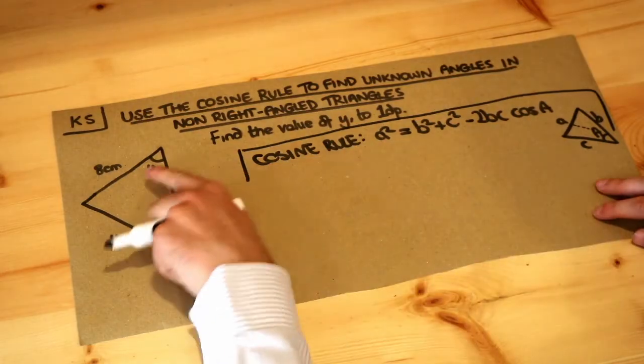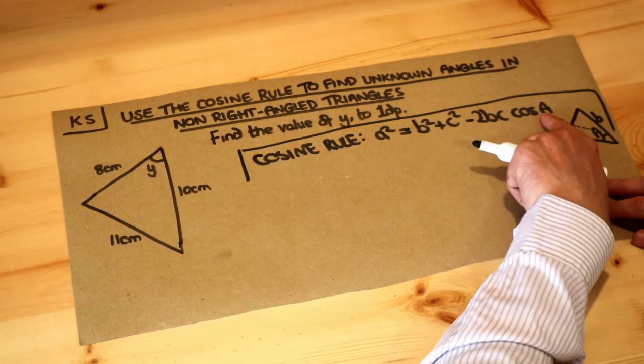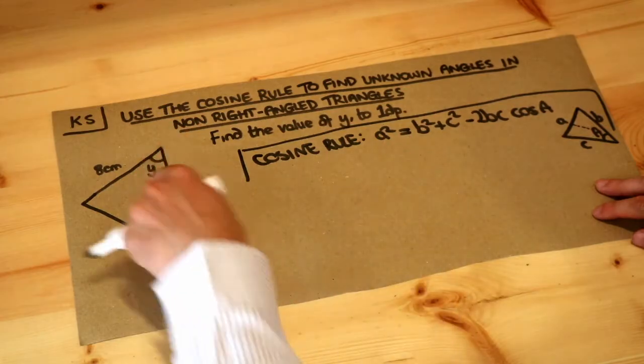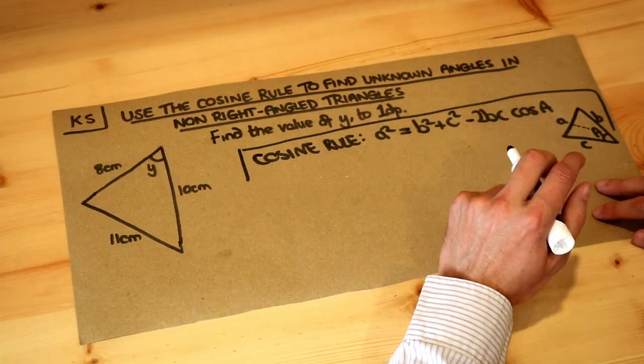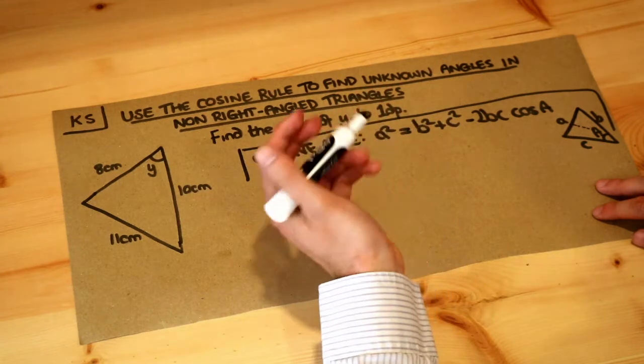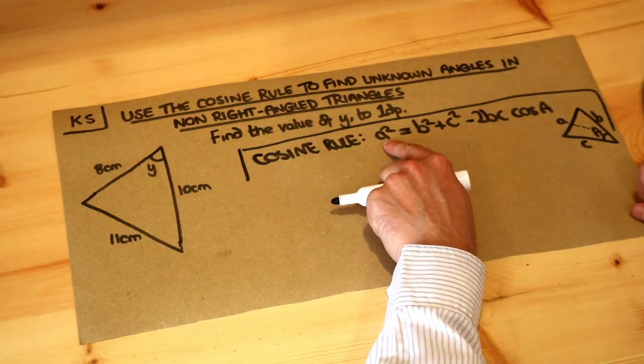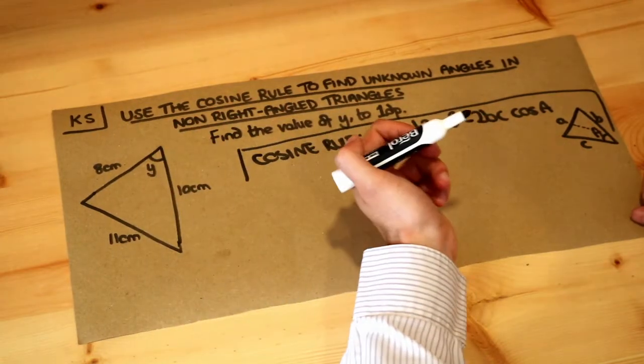Now we've got an unknown angle in this case, that's the y, so that's going to be the unknown here. Now we could just label the sides as before and substitute into this equation, and it will require a bit of manipulation because before we had the unknown side, we just had to square root both sides at the end and it was relatively easy.